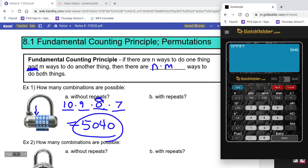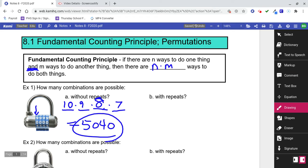Part B says, what about if we have repeats? We can still look at this as a blanks problem. But this time, if we're allowed to have repeats, then all of those blanks could be any of the 10 numbers. It's 10 to the fourth, and 10 to the fourth is 10,000.